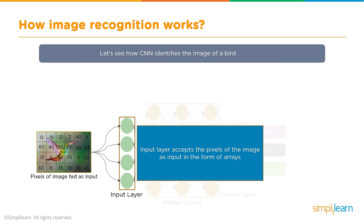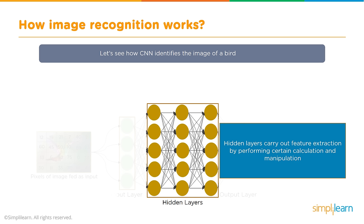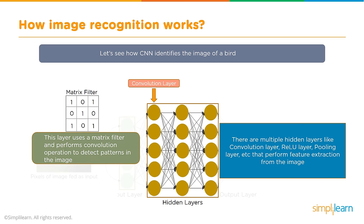The input layer accepts pixels of the image as input in the form of arrays. Each block of the bird is labeled in different arrays. The hidden layers carry out feature extraction by performing calculations and manipulation — reorganizing that picture multiple ways until we get data that's easy to read for the neural network. This layer uses a matrix filter and performs a convolution operation to detect patterns in the image. Convolution means to coil or twist, so we twist the data and use that operation to detect new patterns.